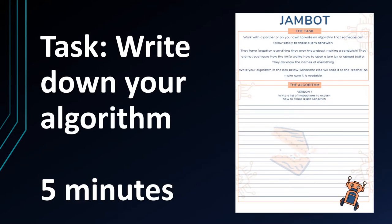Now it's time to write down your algorithm to make a jam sandwich. You can work with a partner or on your own — make sure it's something someone can follow safely. Remember, JamBot or your teacher or an adult have forgotten everything they know about making a jam sandwich. They don't even know how the knife works. So write your algorithm down step by step and then it can be read out and followed by someone. You can use the worksheet if you've got that available, or just write it on a piece of paper. Give yourself five minutes to do this and pause the video about now.